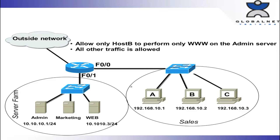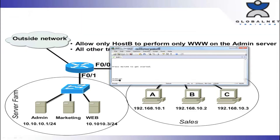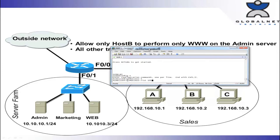We want to allow only host B to perform WWW on the admin server. No one else can do it. So let's go to a router and do that first line. Config T. We know we need to use an extended access list, a numbered access list, so 100 to 199, any number. We need to permit host B, but before we say host B we have to choose the protocol field in the network layer header. The four most common are IP, ICMP, TCP, or UDP, but many others can be used — up to 255 variables. Since we're filtering on WWW port 80, that goes through TCP, so we're going to type TCP here.